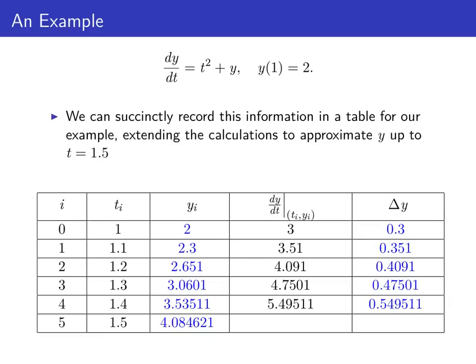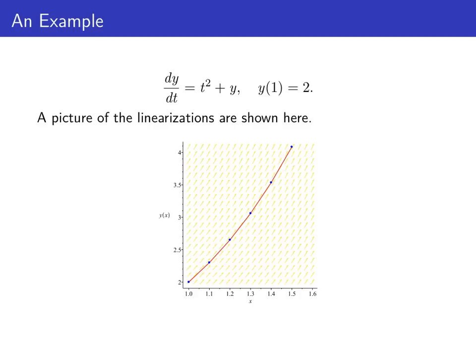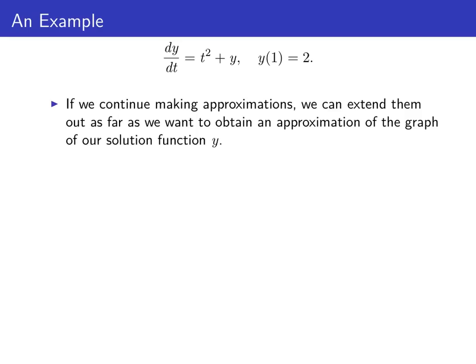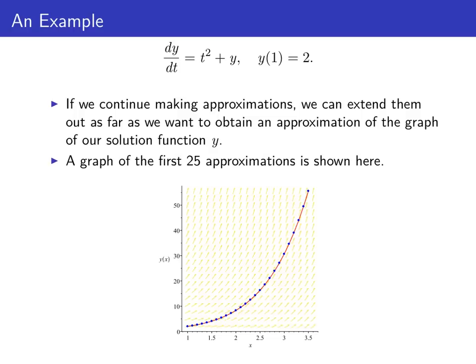We can apply this process over and over again, ultimately building a whole sequence of approximations yᵢ, as shown in the table. We can get a good approximation to the graph of our solution y by connecting all the linearizations together. Here's a picture of the first five linearizations, and if we keep going, we can extend these approximations as far as we want. Here we have the first 25 linearizations connected together. The blue points show the approximations (tᵢ, yᵢ) for i = 0 through 25, and the red graph is a pretty good approximation to our solution, following the slope field well.